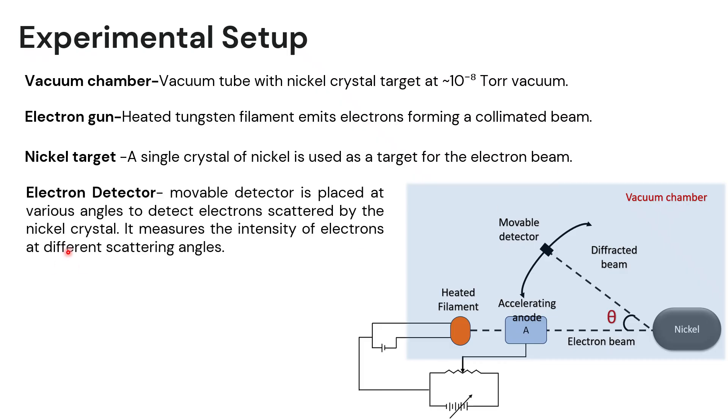There is also an electron detector. A movable detector, as you may see in the figure, is used to detect the electrons scattered by the nickel crystal. This detector measures the intensity of electrons at different scattering angles. A rotational mechanism allows measurement of the angular distribution of scattered electrons and accurate determination of diffraction angles. This is the experimental setup of Davison-Germer.